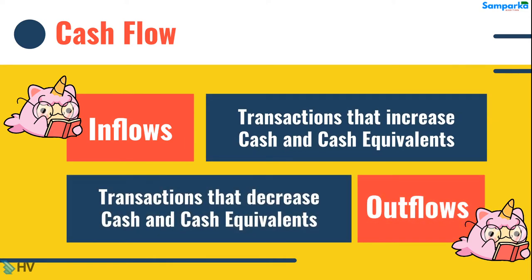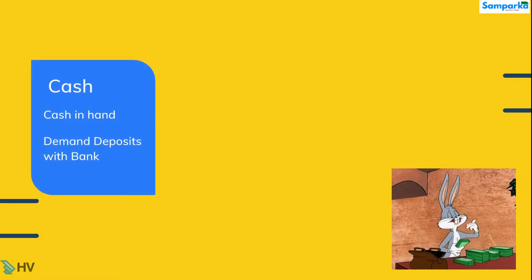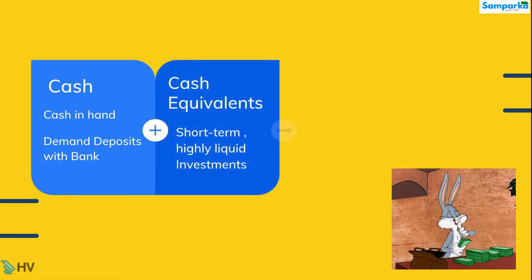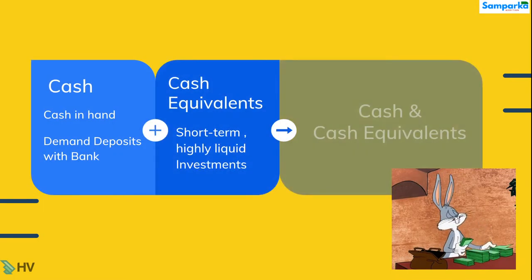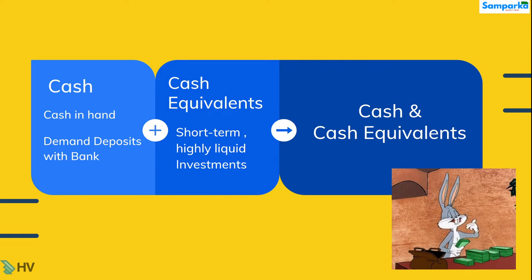Transactions that increase cash and cash equivalents are inflows, whereas transactions that decrease it are outflows of cash and equivalents. As per Accounting Standard 3, cash comprises cash-in-hand and demand deposits with banks, and cash equivalents means short-term highly liquid investments that are readily convertible into known amounts of cash and which are subject to an insignificant risk of changes in value.